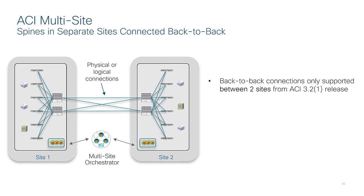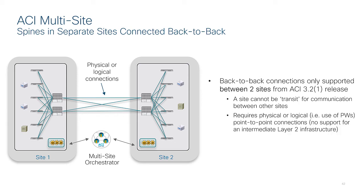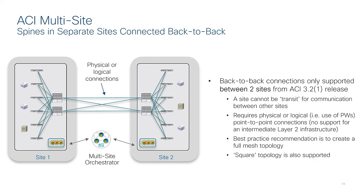With Multisite, we can support a specific topology where the spines are connected back to back. This has been supported since ACI Release 3.2.1 and is restricted to only two sites — we cannot support more than two sites. The connectivity between sites could be physical, such as dark fiber or WDM circuit, or logical, such as an Ethernet over MPLS pseudo-wire across an MPLS core, to ensure spines see each other as directly connected from a layer-3 point-to-point perspective. When there is direct connectivity between spines, the recommendation is always to create a full mesh topology, though a square topology is also supported.